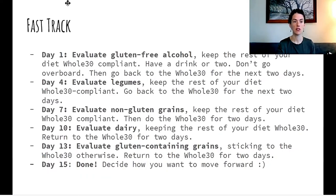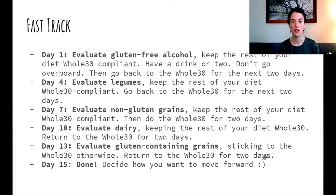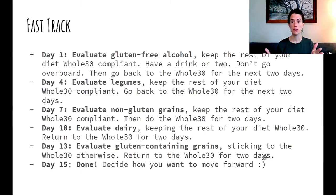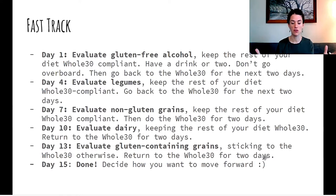To briefly recap, the fast track reintroduction option is one of the two choices that the Whole30 franchise puts out there — fast track and slow roll. For the fast track, you are taking 15 days, usually, and you are reintroducing a food, then going back to a strict Whole30 for two days, reintroducing a food, going back to the strict Whole30 for two days, until you've reintroduced the groups of food that you want to trial in this manner and see how they feel in your body.